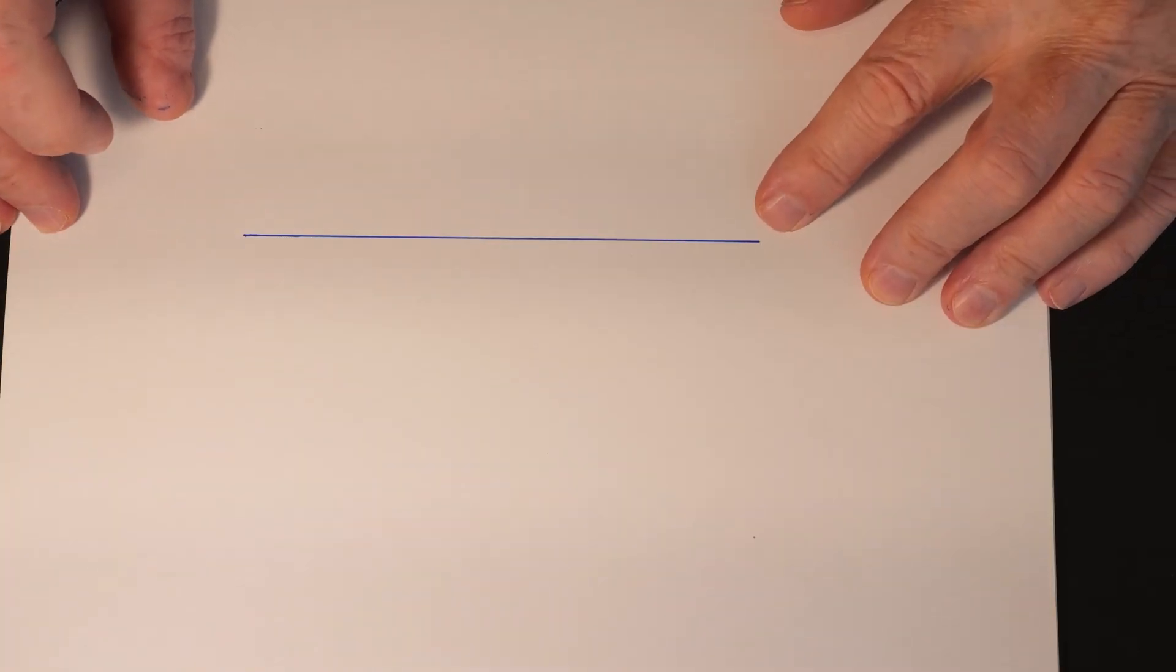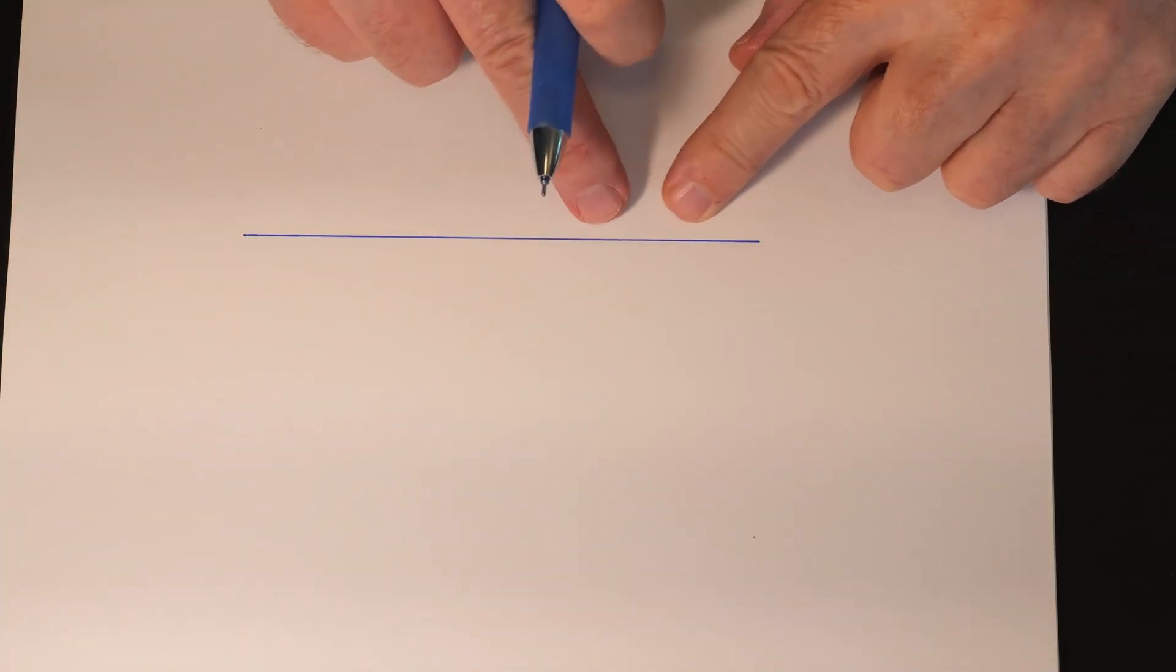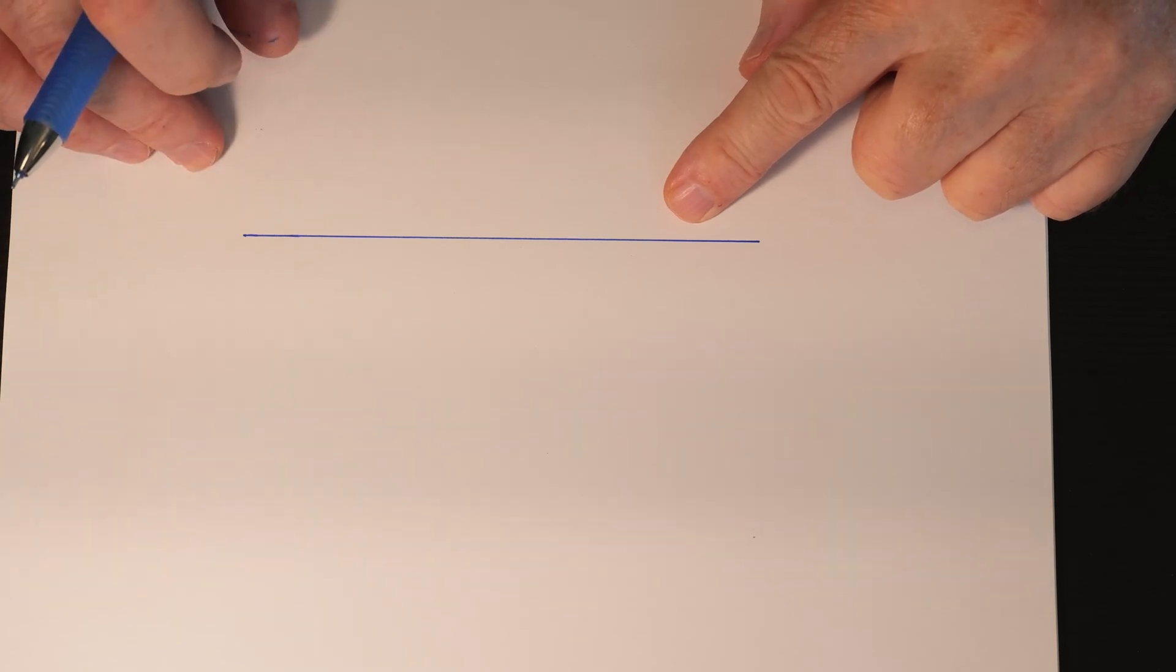Did you know that you can draw an angle of 30 degrees to an existing line using just a compass and a straight edge?